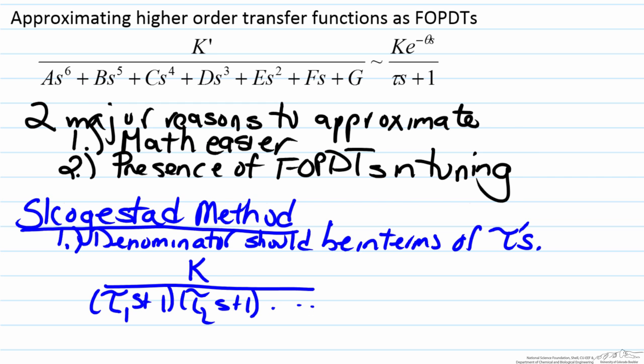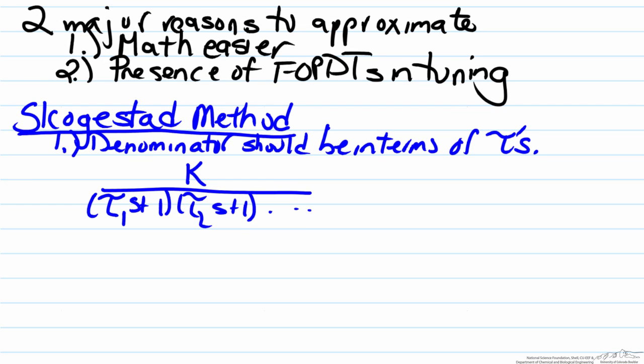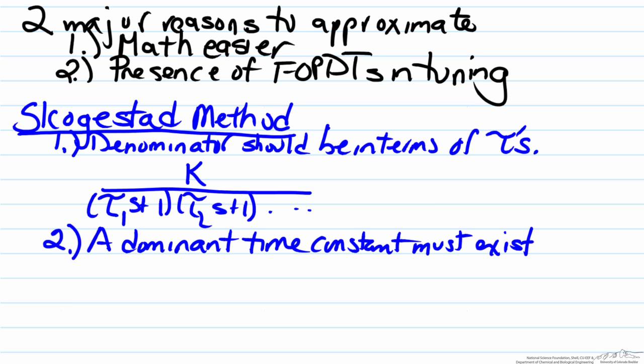In order to use the Skogestad method, a couple other things have to be true. The first is the fact that a dominant time constant must exist. The dominance of a time constant is the fact that the largest value of tau must be at least one and a half times greater than the next largest time constant. How well the Skogestad approximation fits hinges very much on this, so therefore if the ratio between the largest and the next largest is about one and a half, the fit will work, but will not be as good in comparison to a system where the ratio would be five or six or higher.